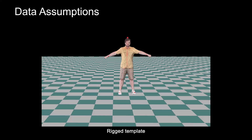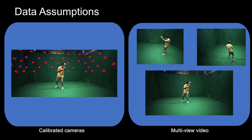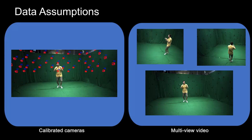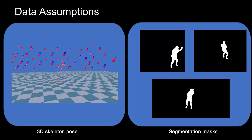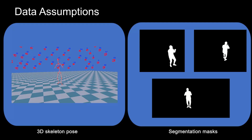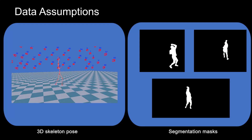In more detail, we assume the rig template mesh of the actor is available, as well as a multi-view capture of the subject performing various motions with calibrated cameras. We then automatically extract foreground masks and skeletal motion. With this training data, we learn a sparse multi-view image and pose-driven character.